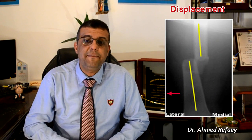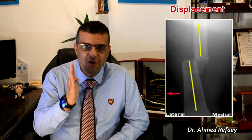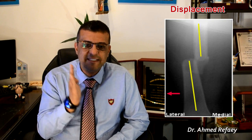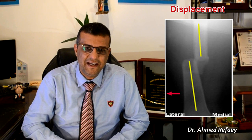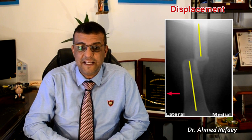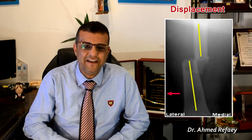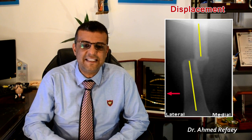By convention, abnormalities of position describe the relationship of the distal fracture fragment relative to the proximal fragment — meaning the displacement or angulation of the distal bone fragment, not the proximal. Displacement describes the amount of offset of the distal fracture fragment relative to the proximal one, as seen in this image — for example, lateral displacement of the distal femoral fracture fragment.